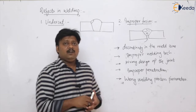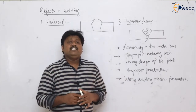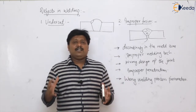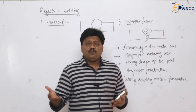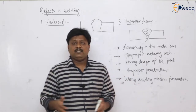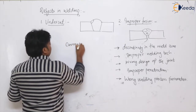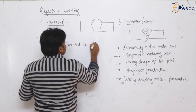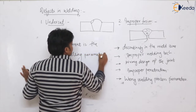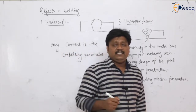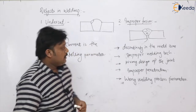We are going to see some discontinuity in the weld zone. The main remedy for controlling incomplete fusion is the control of welding current. If you are not providing the required amount of current to fuse the metal, the heat produced will not be sufficient and your joint will be incomplete. So current is the controlling parameter to minimize improper fusion.